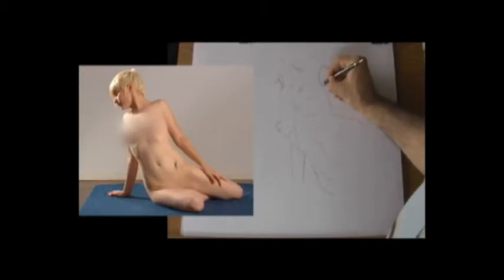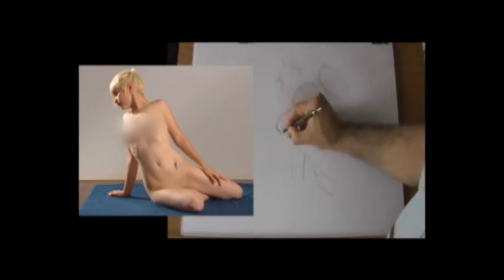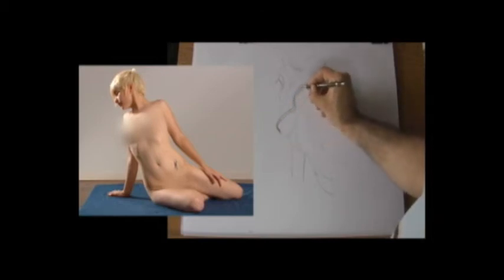Now, we start at an outer edge of the figure, near the hips or chest or thighs, somewhere with a large three-dimensional form. Keep your eyes and the pencil on the surface of the model as you travel over the contours across the figure.